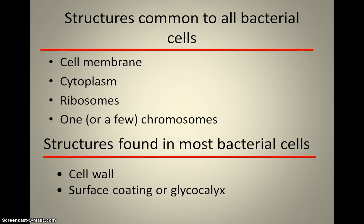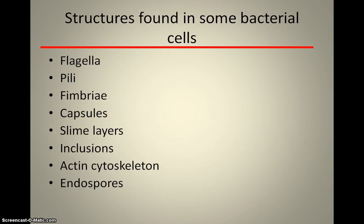Structures common to all bacterial cells include a cell membrane, cytoplasm, ribosomes, and one or a few chromosomes. Structures found in most but not all bacterial cells include a cell wall and the surface coating, also known as a glycocalyx. Structural components found only in some bacterial cells include flagella, pili, fimbriae, capsules, slime layers, inclusion bodies, actin cytoskeletons, and endospores.